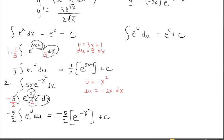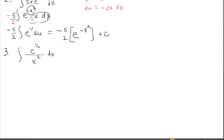For example three, we have a fraction with a natural exponential function. I'll think about the e-to-the-u route, but first rewrite the expression by bringing x squared up from the denominator. If I proceed with the e-to-the-u integral rule, then u would have to be 1 over x. Let's see what happens if I allow that.